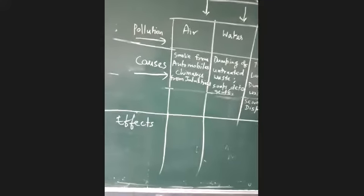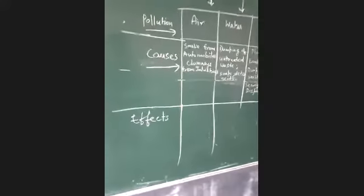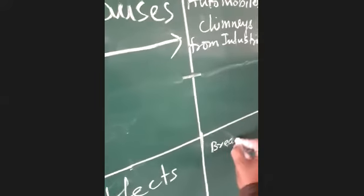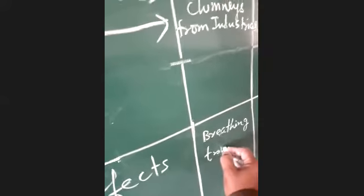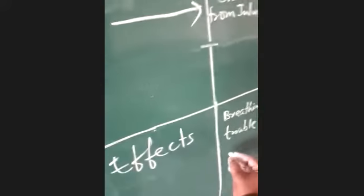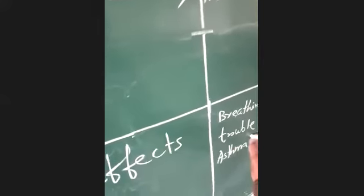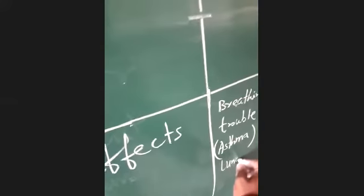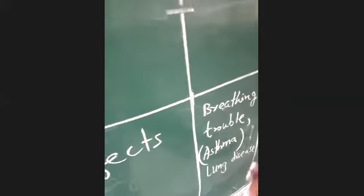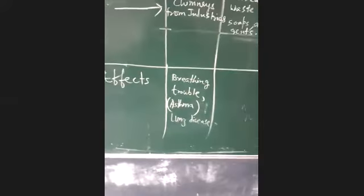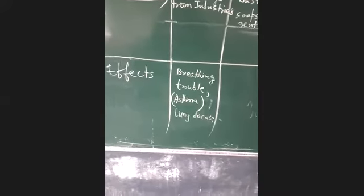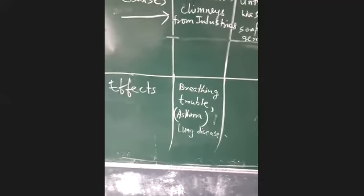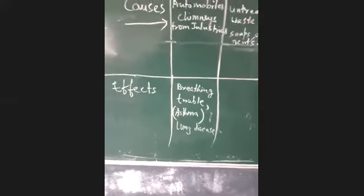We have finished causes. Now we will learn about effects. What are the effects of air pollution? Effects of air pollution: breathing trouble, asthma, lung disorder, lung disease. All these problems we can do with breathing trouble, lung disorder, lung disease, heart problem, respiratory problem, coughing. Good, we all have basic answers.